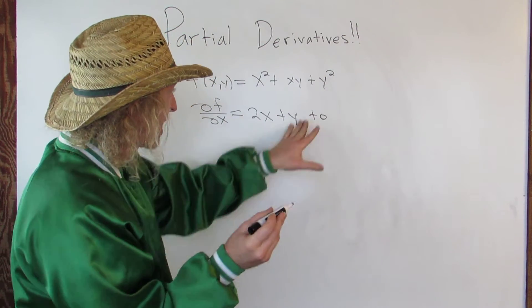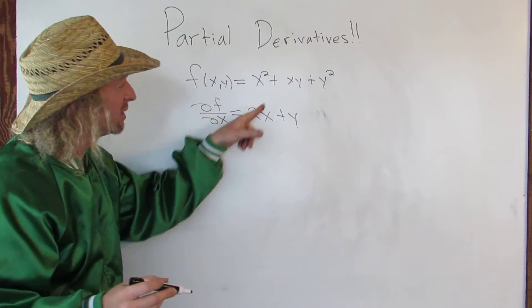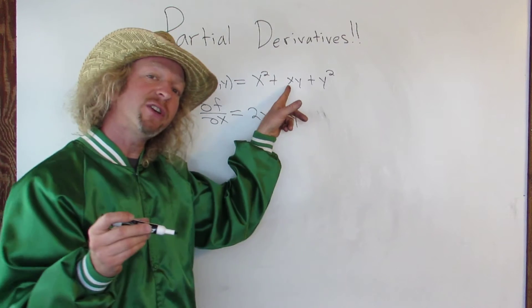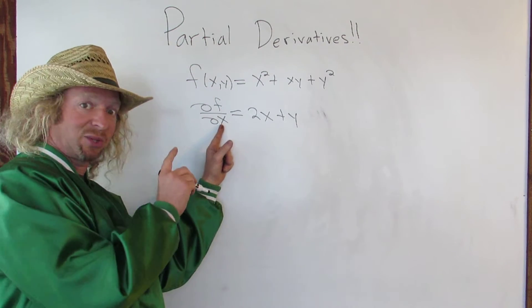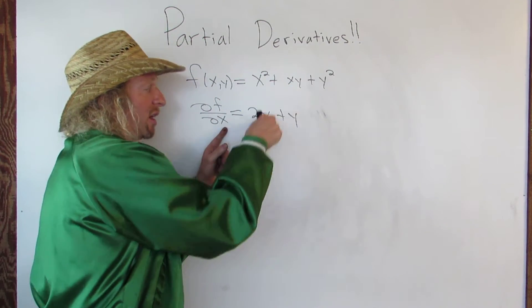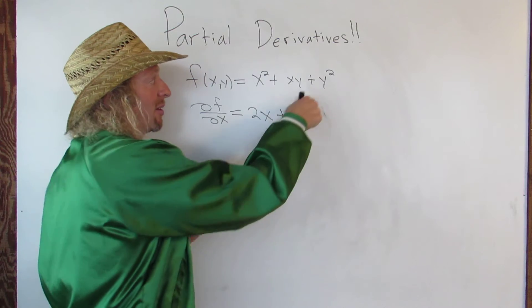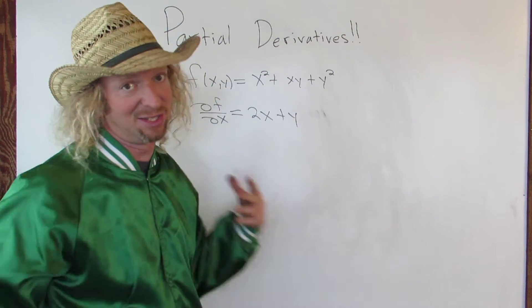So you just get that. We get 2x here. The derivative of x times y with respect to x — the derivative of x is one and the y hangs out. And the derivative of y squared is zero.